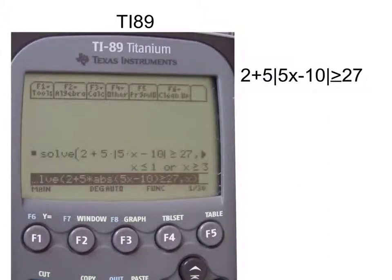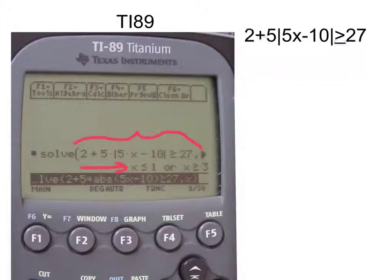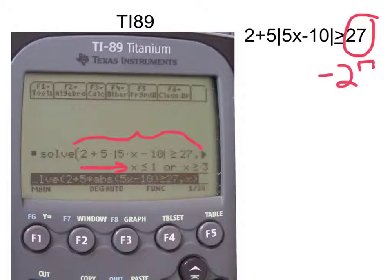And here it is. Here is our inequality and here is our answer. X is less than or equal to one, or X is greater than or equal to three. Now what would happen if we make this 27 a negative 27 and solve for this inequality?